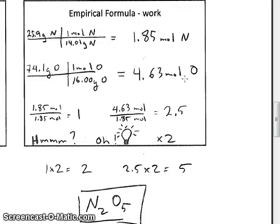Now, again, I want to divide both of these values by the smaller of the two. Dividing 1.85 by itself will produce a number of one. Then 4.63 divided by 1.85 will give a value of 2.5. That's rounded off a little bit. So what do I do with these numbers to determine the empirical formula of the compound?